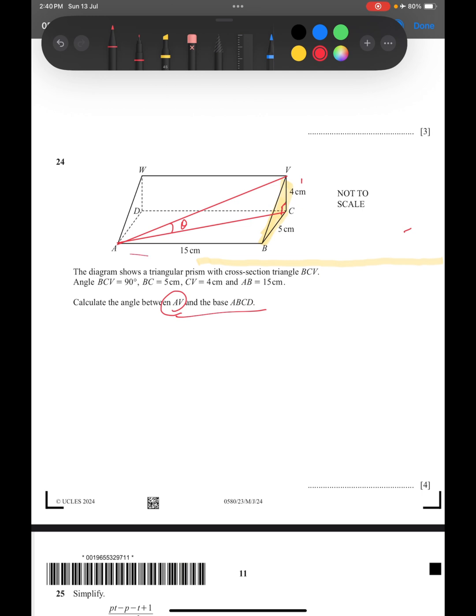For this, first of all we have to get AC because we know that ABC will be a right angle triangle because ABCD is a rectangle, so this angle is 90 degrees.